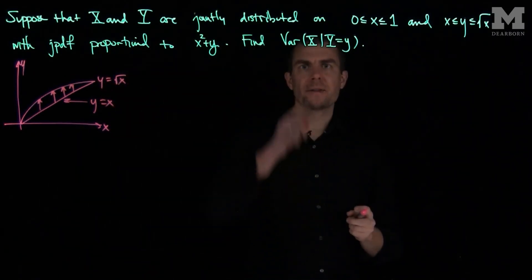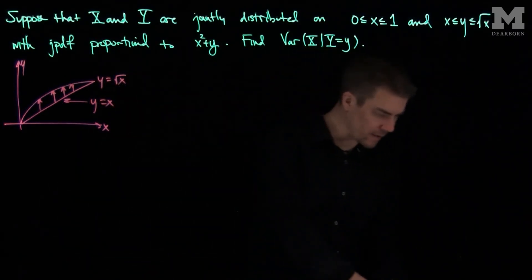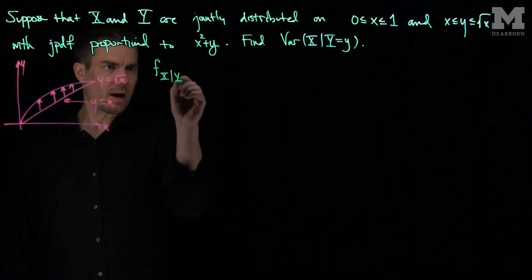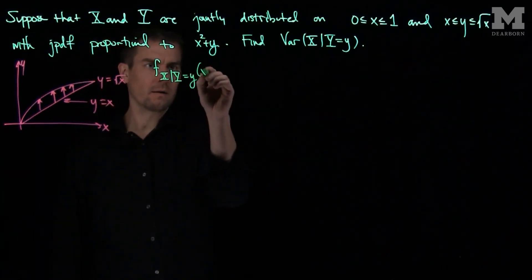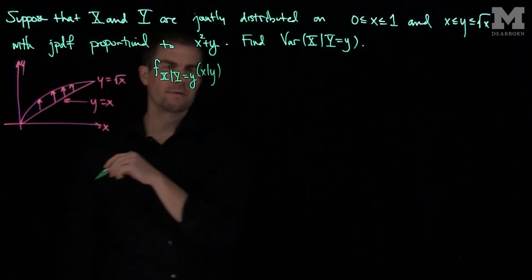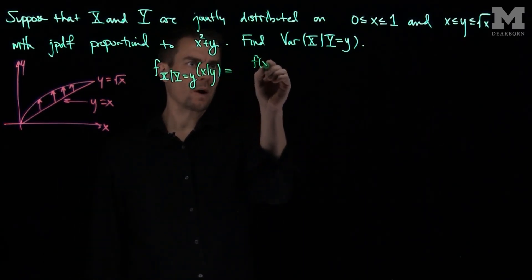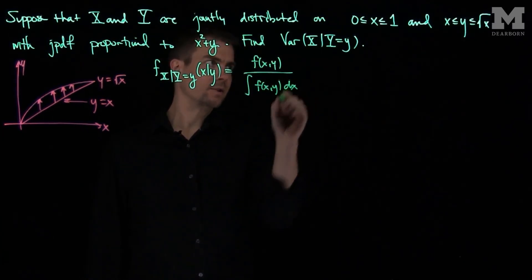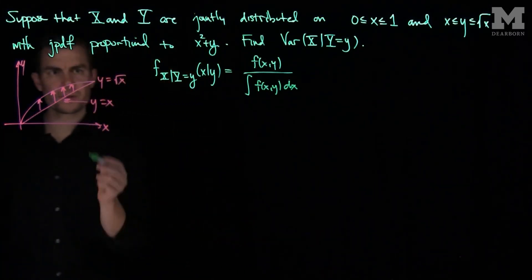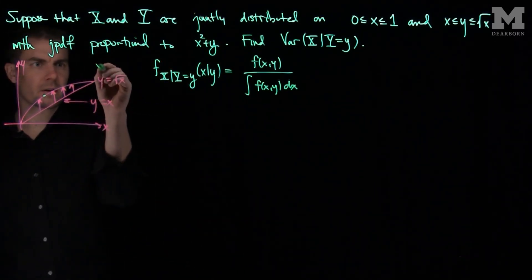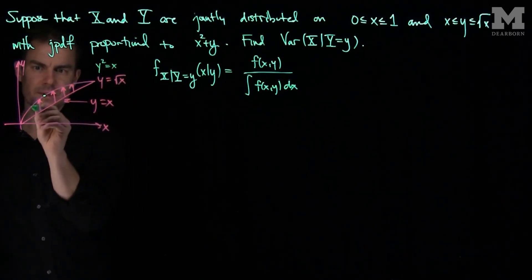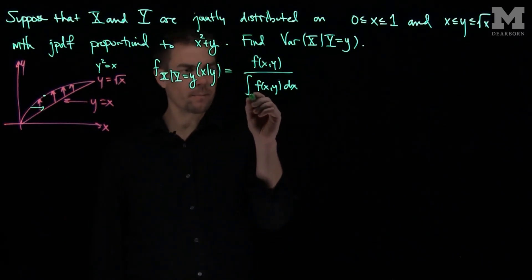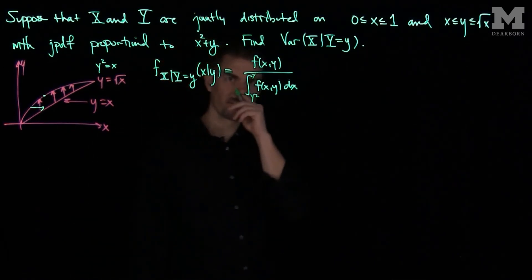We need to find the conditional density of x given that y is equal to y. So f of x given y equals little y is going to be f(x,y) over the integral of f(x,y) dx. We need to figure out where x goes in this region. In this region, x starts on the curve y squared and goes to the second curve y equals x, so x goes from y squared up to y. That's our limit of integration.